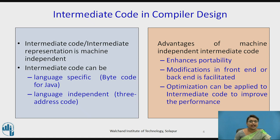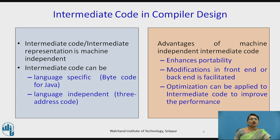Modifications of the front end and back end are facilitated — there is no dependency such that if the front end is changed then the back end must also change; we can do modifications separately. Optimization can also be applied to the intermediate code so that performance can be increased, improving the overall working of the compiler and the conversion process from source program to target program.